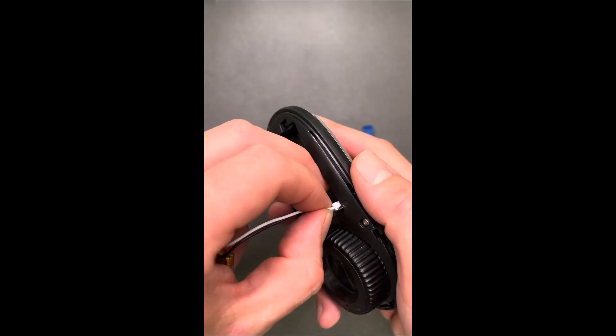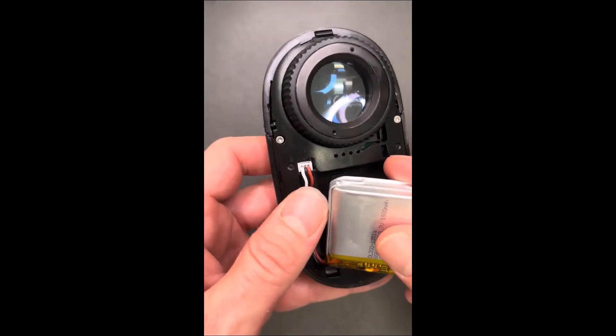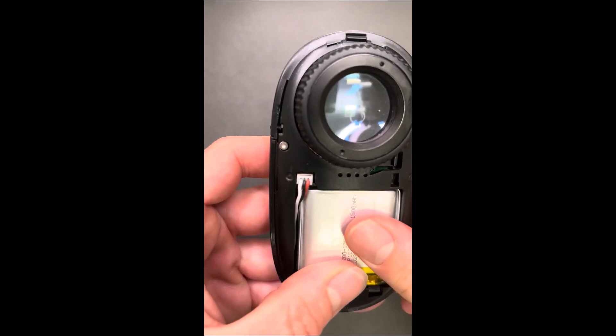You'll replace the battery by first plugging in the 3-pin connector. Then, tuck your wires underneath the battery itself so that they are not prone to getting pinched.